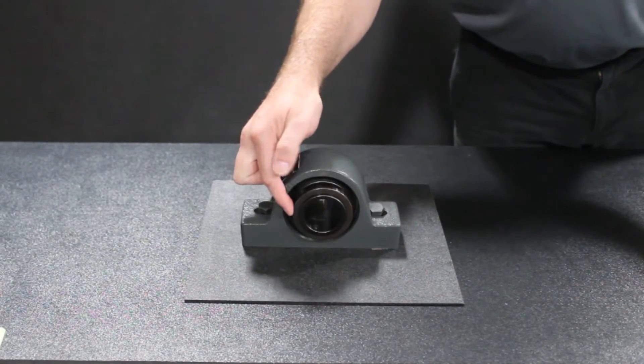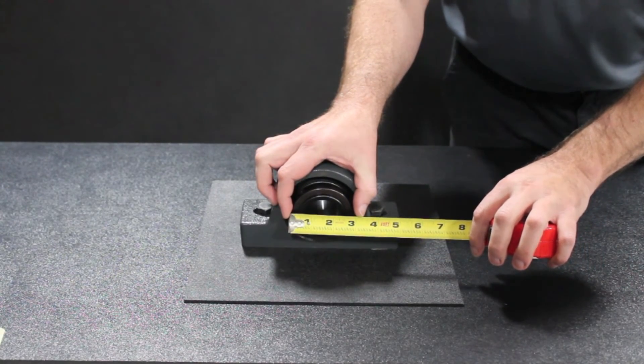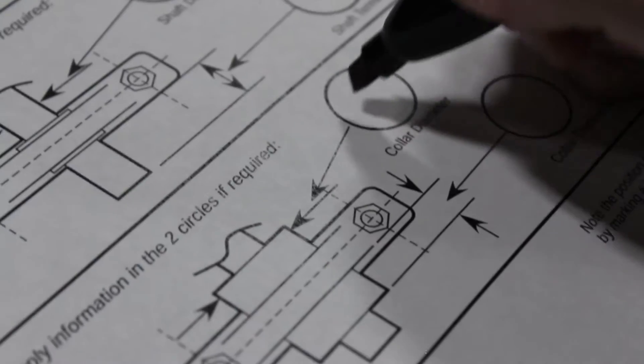To measure the collar diameter, locate the two outermost points of the bearing's collar, then measure the distance between them.